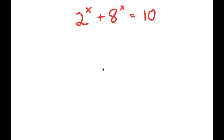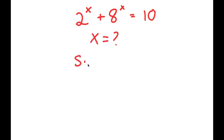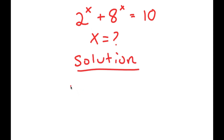In this problem, I have 2 to the power of x plus 8 to the power of x is equal to 10. So I want to find the value of x here. So for my solution, I get 2 to the power of x plus 8 to the power of x is equal to 10.